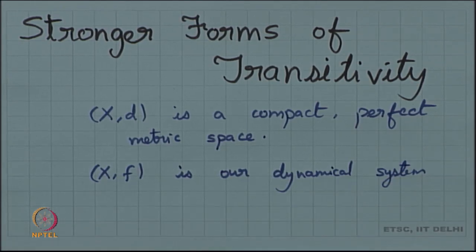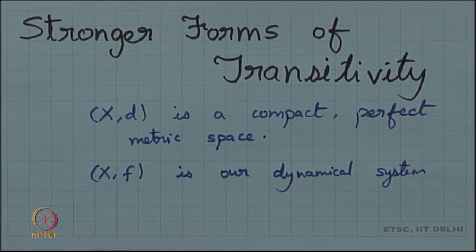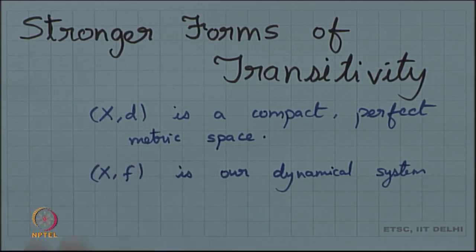As we have previously mentioned, transitivity is one of the stronger forms of chaos. We would like to see what are the stronger forms of transitivity, because there are a lot of chaotic properties attached to it. We want to interrelate all the chaotic properties with transitivity, and that is one reason why we want to look into these stronger forms.